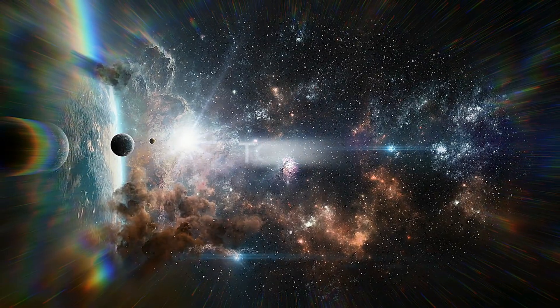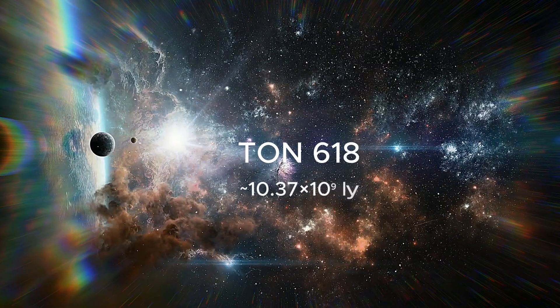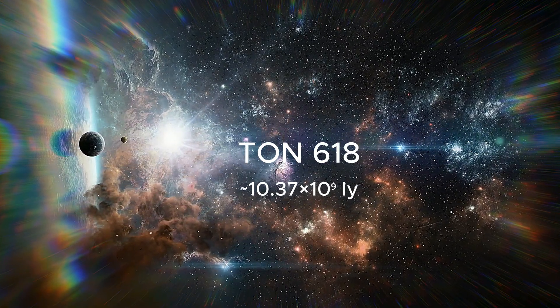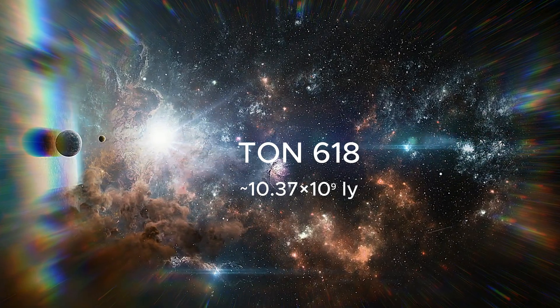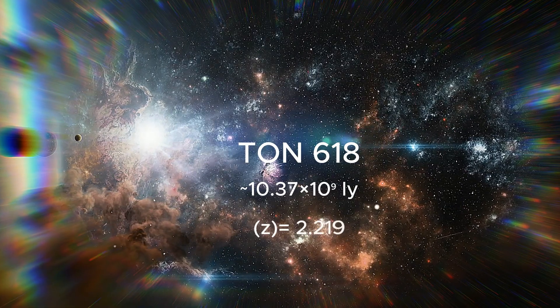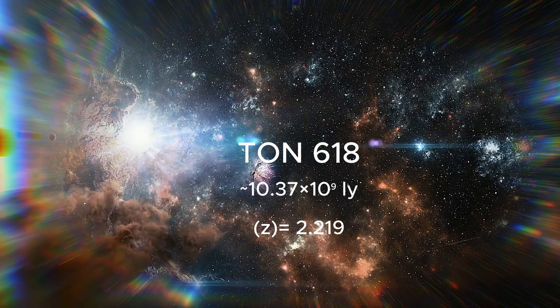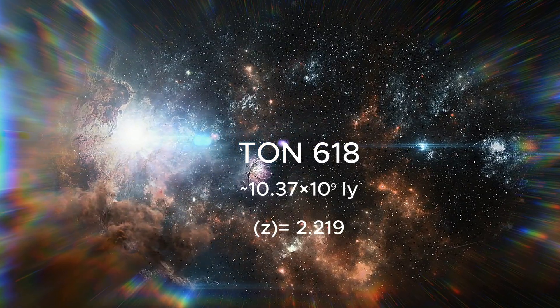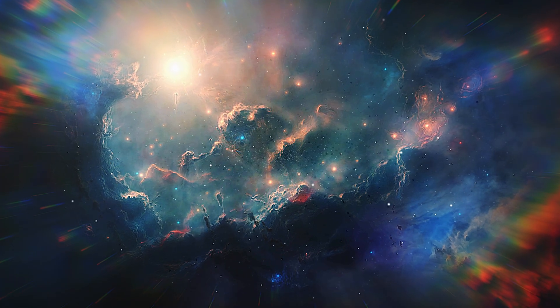TON 618 is located approximately 10.37 billion light years away from our solar system, so it cannot swallow us. Its redshift value is 2.219. Formed in the early days of the universe, TON 618 is like a time capsule. The first light from it set out on its journey about 10 billion years ago.